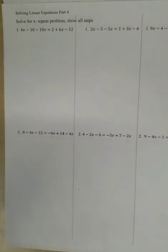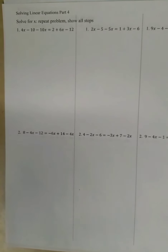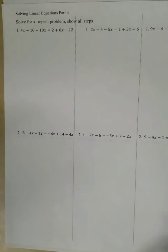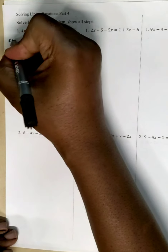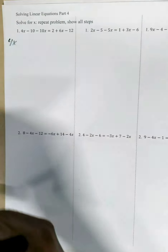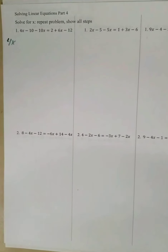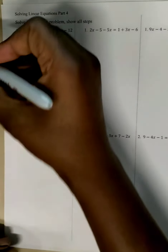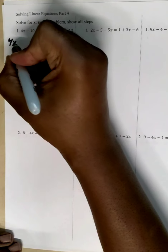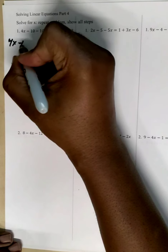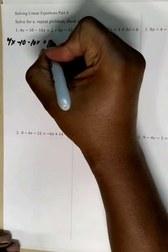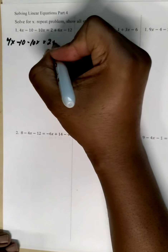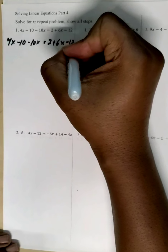We're going to be solving linear equations. This one is 4x minus 10 minus 10x equals 2 plus 6x minus 12.